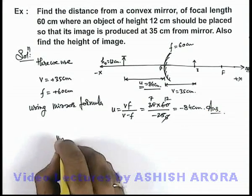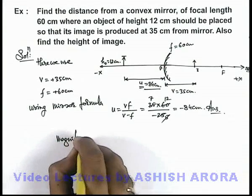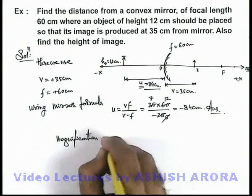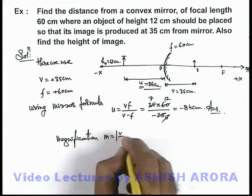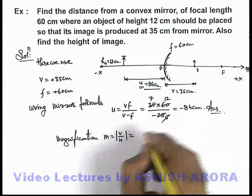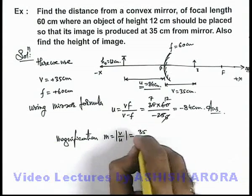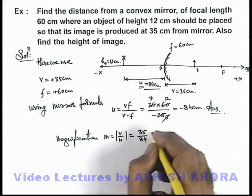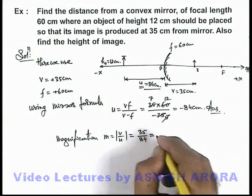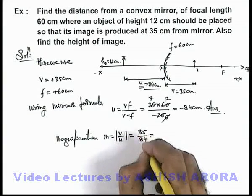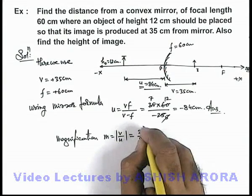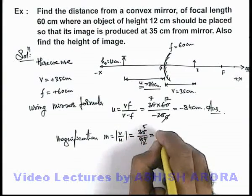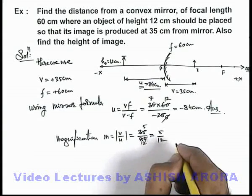Now, if we talk about magnification in this situation, magnification m we take as the magnitude of v by u, which is 35 divided by 84. We can cancel by 7, so this becomes 5 by 12. The magnification here is 5 by 12.